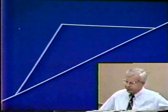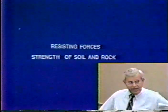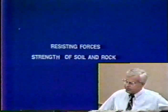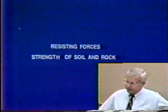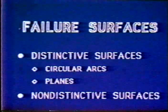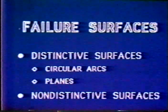Let's look at a simple highway slope. When we place materials or a highway embankment on a slope, it has a tendency to move downhill. This movement is caused mainly by the force of gravity. Not all highway slopes fail because there are resistant forces that act in opposition to gravity — mainly the strength of the soil and rock, which are the types of materials used to build highway embankments. Highway failures usually occur in certain patterns: we have distinctive surfaces and non-distinctive surfaces.